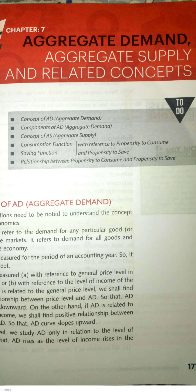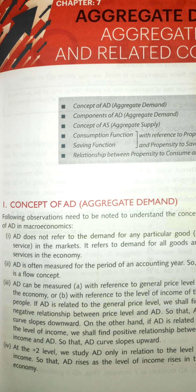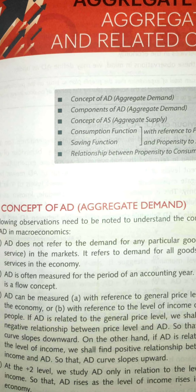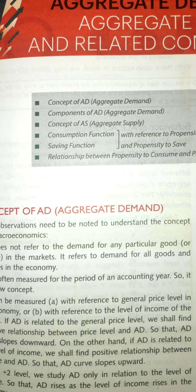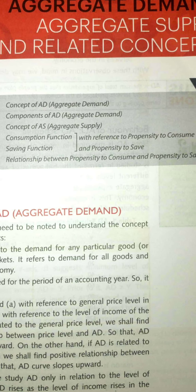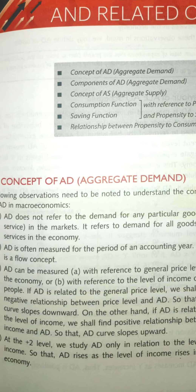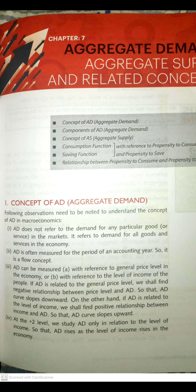So today we are going to cover the concept of AD. In this chapter we are really focusing on aggregate demand, components of aggregate demand, concept of aggregate supply, consumption function, saving function, and the relationship between propensity to consume and propensity to save. So today our topic is the concept of aggregate demand.